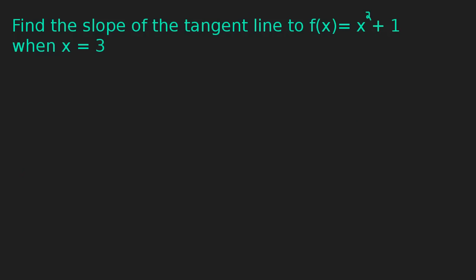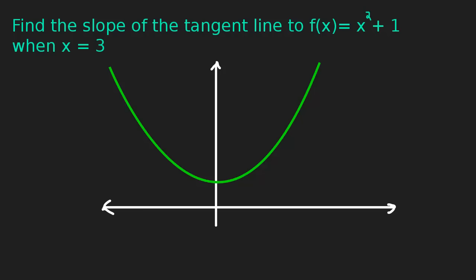Now let's take a look at that. Here is the function x squared plus 1 and what we're saying is when x is 3, the slope of the tangent line to this function is 6. So the slope of this tangent line is 6. That's what we figured out by taking the derivative.